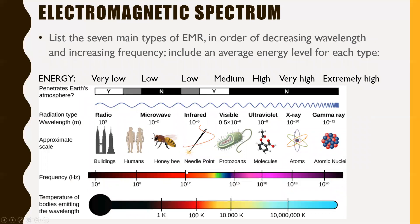Now let's look at the electromagnetic spectrum. There are seven main types of EMR, listed in order of decreasing wavelength both in this picture and in the note package. Going from the highest wavelength to the lowest: radio waves have a wavelength of 10³ meters — that's 1 kilometer. Radio waves are one kilometer long in terms of wavelength, which is kind of crazy. Then we have microwaves at 10⁻² meters, which is one centimeter.